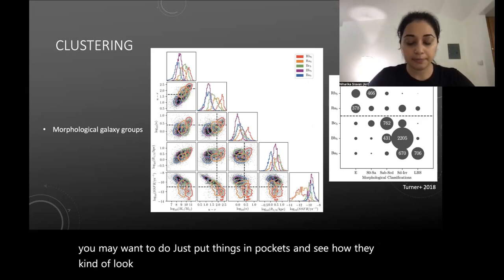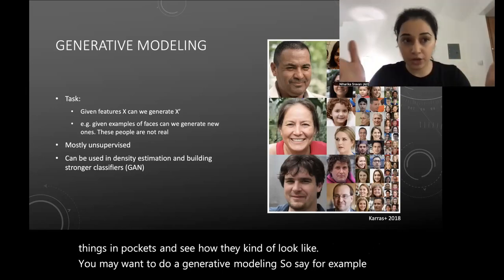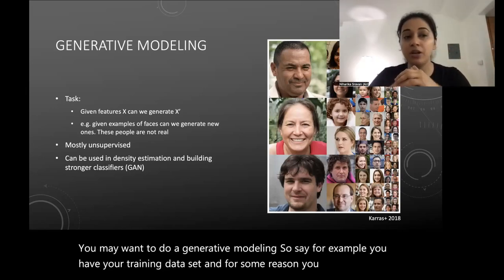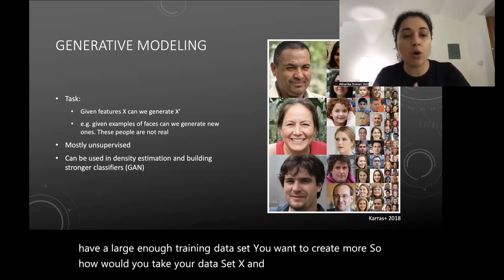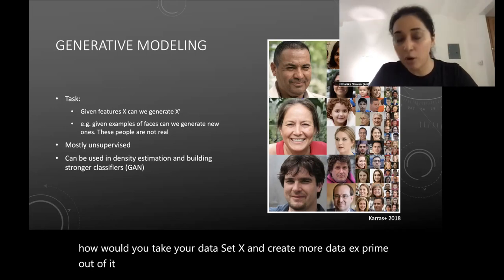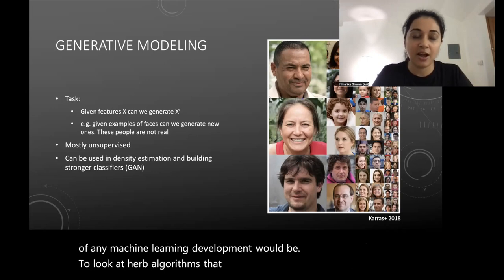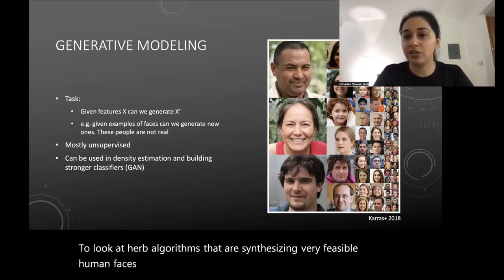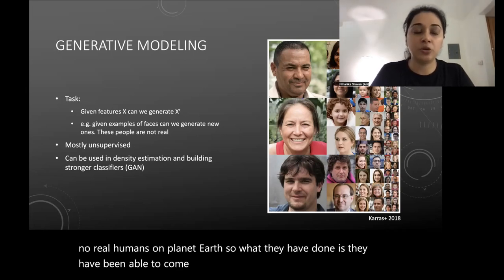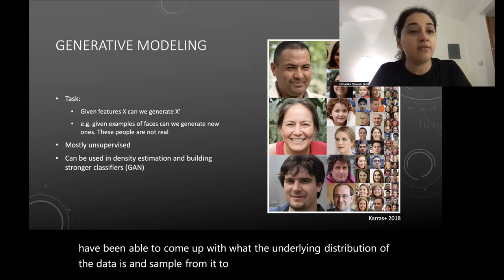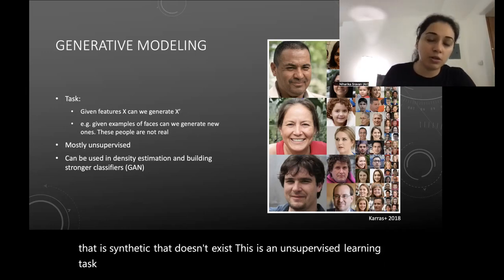You may also want to do generative modeling. Say you don't have a large enough training dataset — how do you take your dataset X and create more synthetic data X-prime? A prominent example is algorithms that synthesize very realistic human faces: these images show human faces of people who don't exist on Earth. The algorithm learns the underlying distribution of the data and samples from it to create convincing synthetic data. This is an unsupervised learning task — you're not interested in target values, just in learning the underlying density.